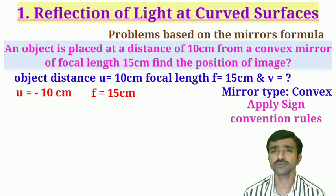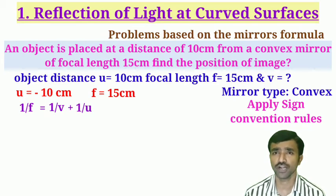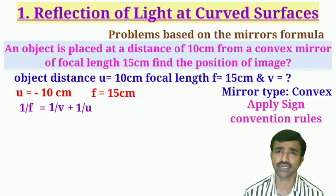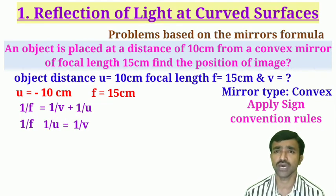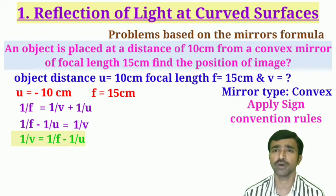Substitute in the mirror relation 1/f = 1/v + 1/u. We need to find v, so we rearrange: move 1/u to the left-hand side. The formula becomes 1/v = 1/f − 1/u.